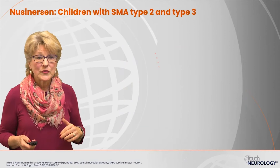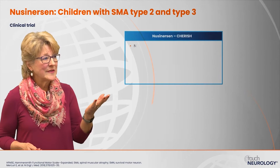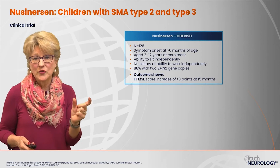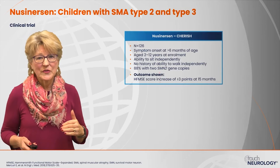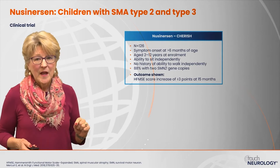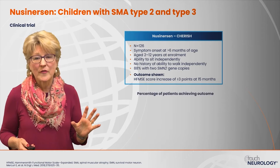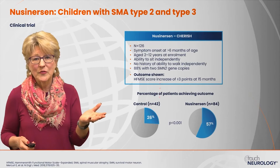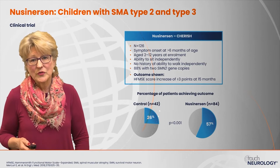With nusinersen in the CHERISH trial involving type 2 and type 3 patients who had symptom onset later than six months of age — aged 2 to 12 years with an average of about age 9 — all patients could sit independently but not stand or walk independently. 88% had just two SMN2 gene copies, predicting a more severe phenotype. In the Hammersmith score, 57% of nusinersen-treated patients showed improvement compared to 26% of control patients.